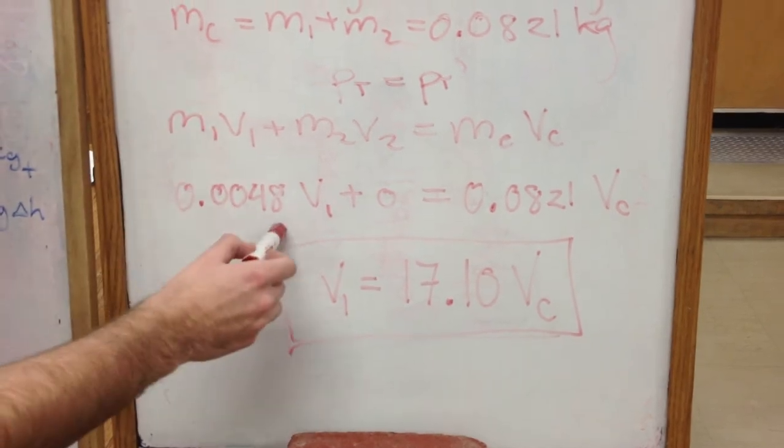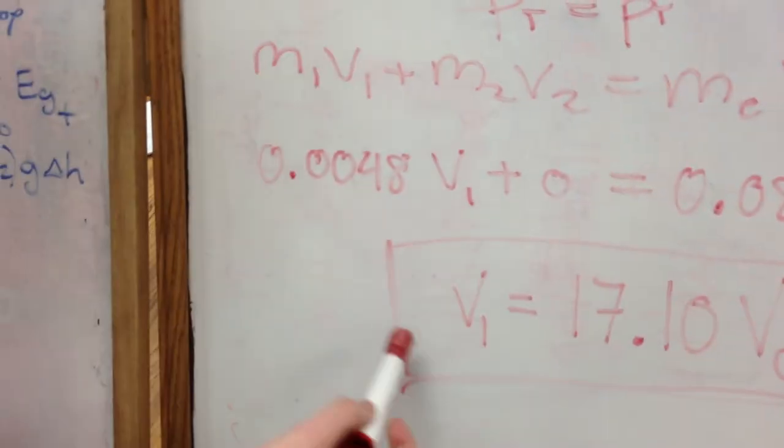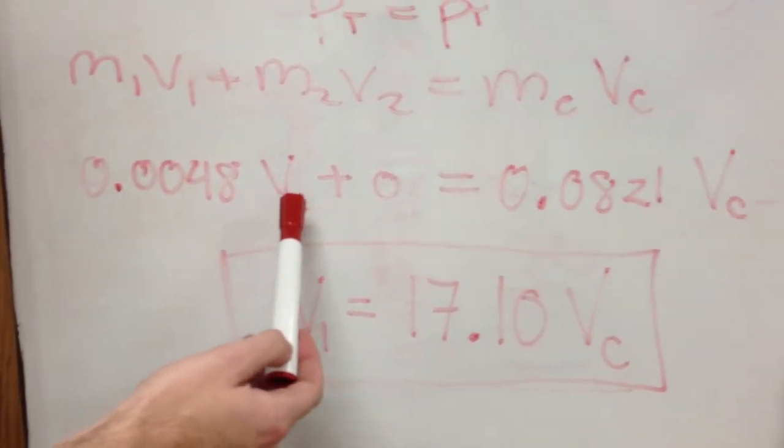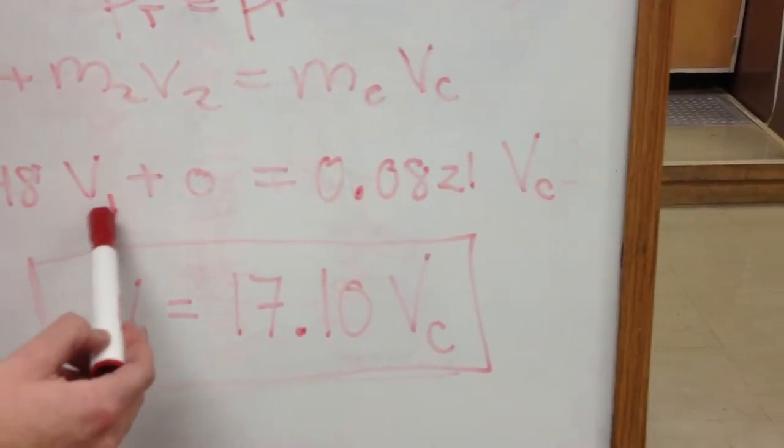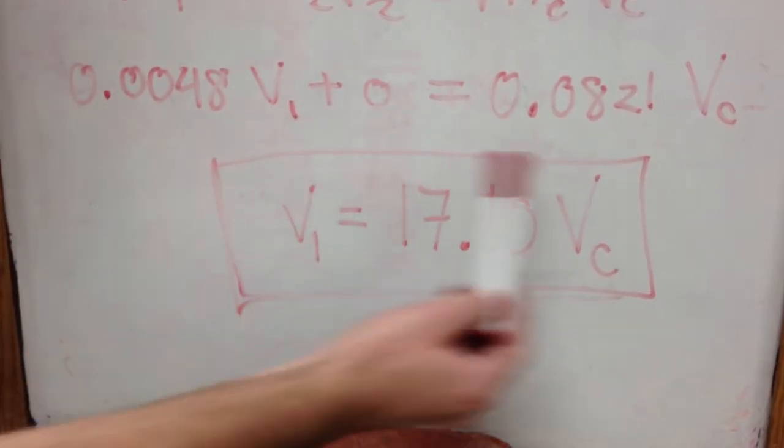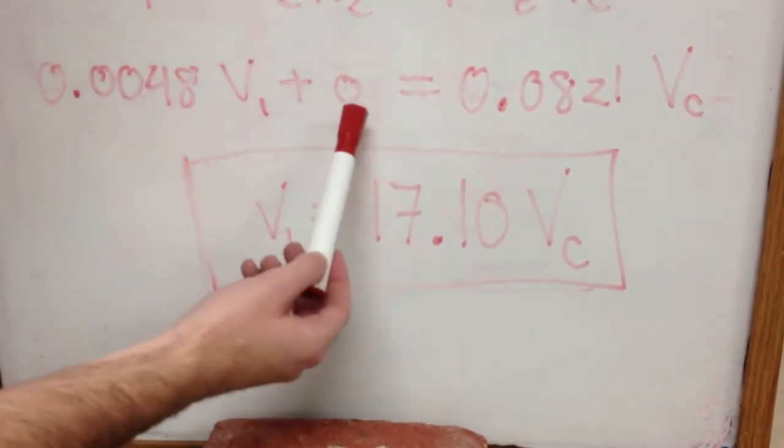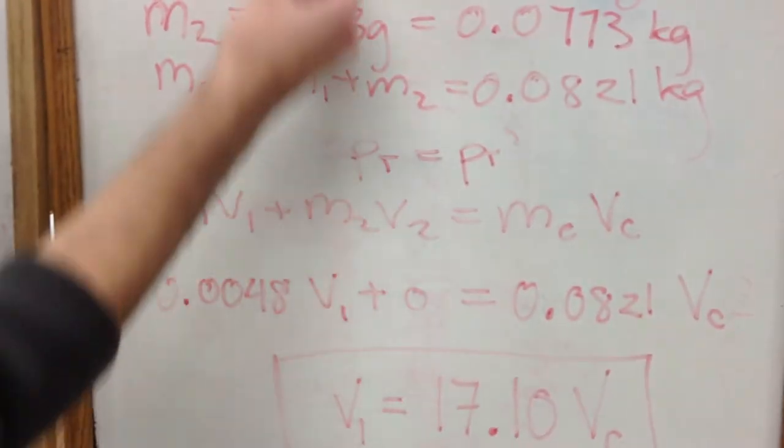Plugging in the numbers, we get that equation, which leaves us with only the velocity of the bullet, which is unknown, and the velocity of the combined masses, which is unknown. This term here is 0 because the velocity of the box was 0.